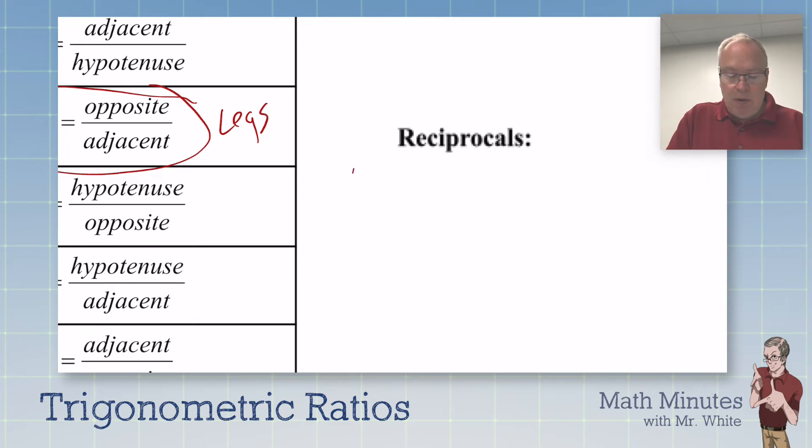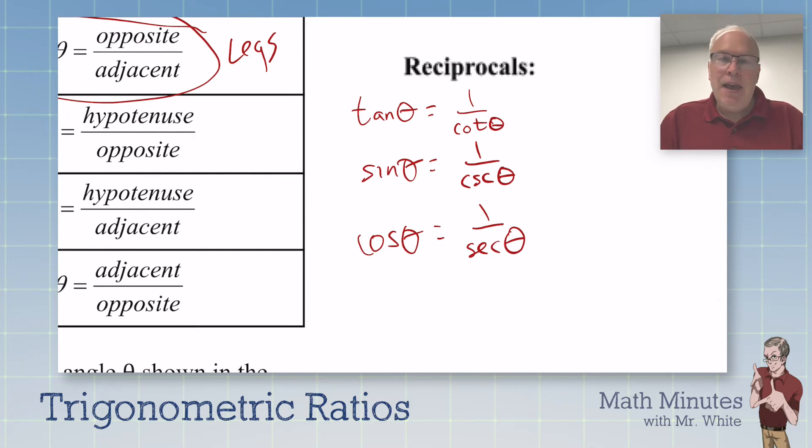Now, reciprocals. Tangent is the reciprocal - that means it's the same fraction, just upside down, flipped over - for cotangent. Tangent is 1 over cotangent. Sine is 1 over cosecant theta. Cosine is 1 over secant theta. These are called identities, reciprocal identities. And if you take a pre-cal or a trig course, you're going to work a lot with all kinds of identities. These are how some of the trig functions relate as reciprocals of one another.